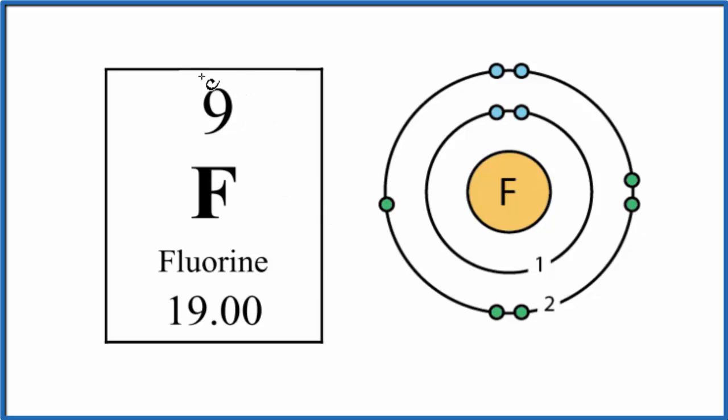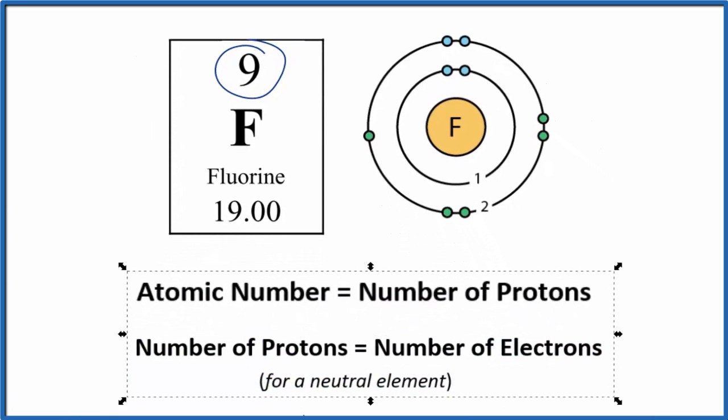Fluorine, first off, atomic number 9. The atomic number, that's equal to the number of protons. So we have atomic number of 9 for fluorine, we have 9 protons.